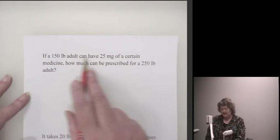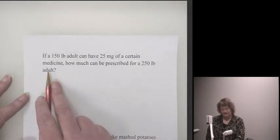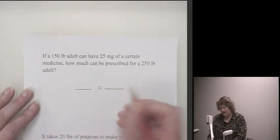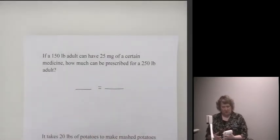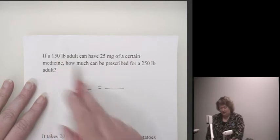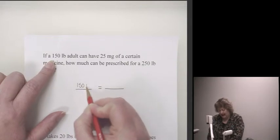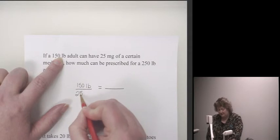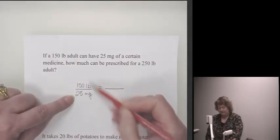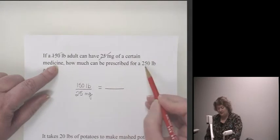If a 150 pound adult can have 25 milligrams of a certain medicine, how much can be prescribed for a 250 pound adult? As you read these proportions, you're going to get to this first number here, and it's a 150 pound adult. So I'm going to put it into one of my fractions because I want to write two ratios equal to each other. I have a 150 pound adult can have 25 milligrams of medicine. So I have a ratio of 150 pounds to 25 milligrams of medicine. Then I'm going to keep reading.